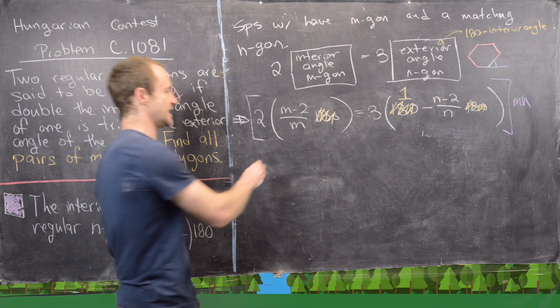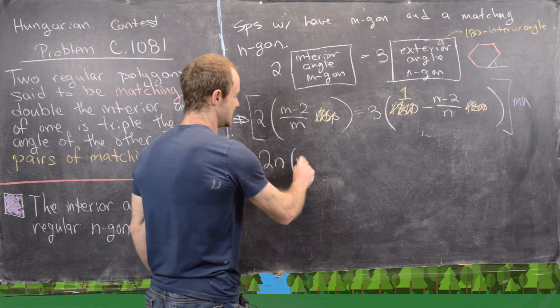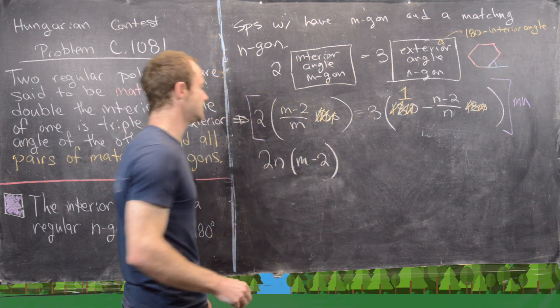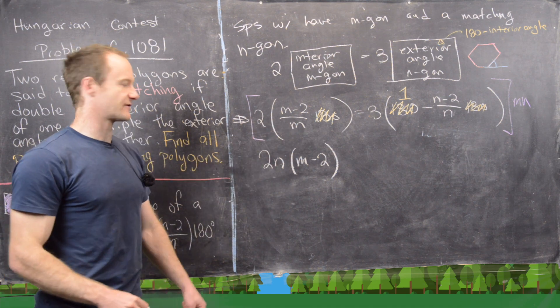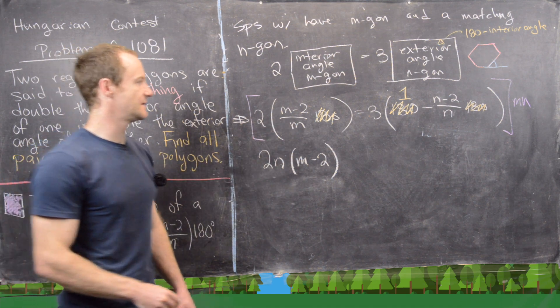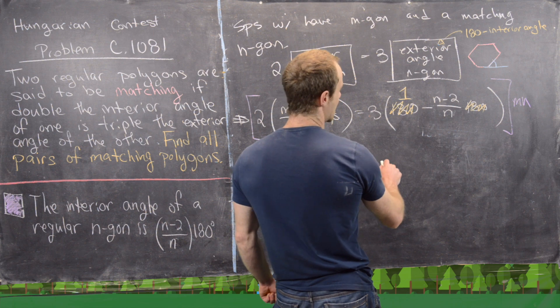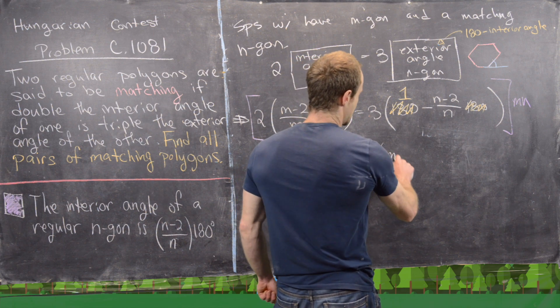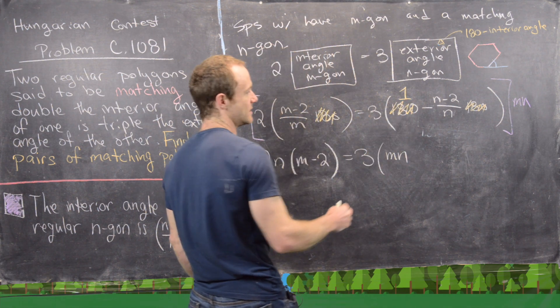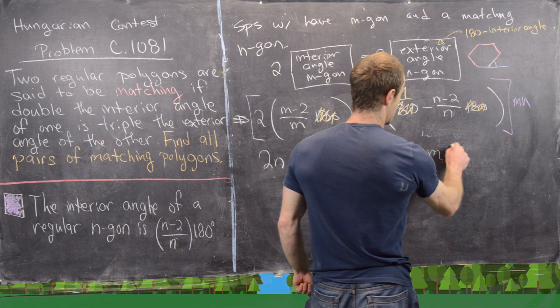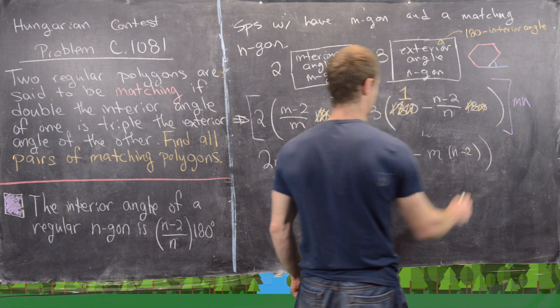So now this is the equation that we need to solve. Notice there's 180s in all of the terms, so let's go ahead and cancel those. And then maybe also multiply by m times n to clear the denominators. So here we're going to get 2 times n times (m-2). And now here we're going to have 3 times mn minus m times (n-2).